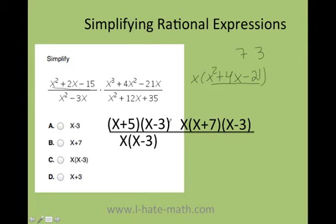Moreover, the bottom I need the factors of 35 that will give me 12, and that's going to be 7 and 5. Now I can go ahead and eliminate. Well, this can go with this.